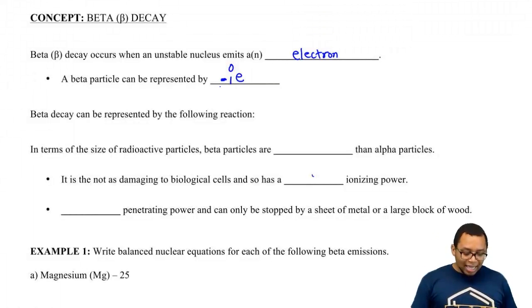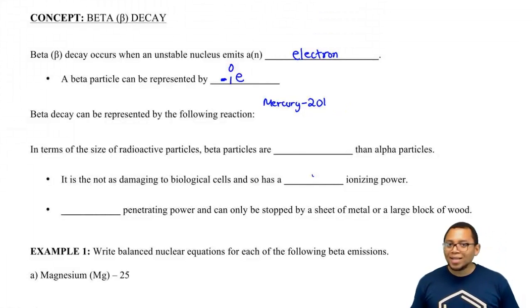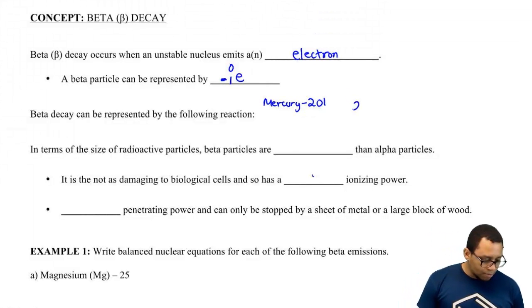Now we're going to say here beta decay can be represented when we emit a beta particle. So for example, if we had mercury 201, and remember the 201 means that's its atomic mass.